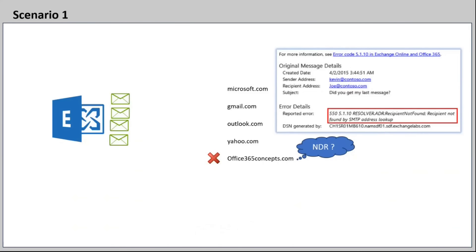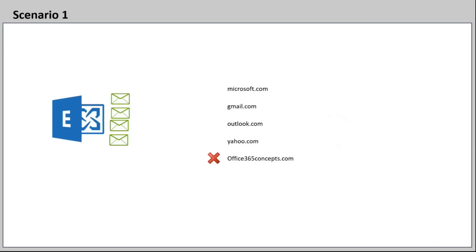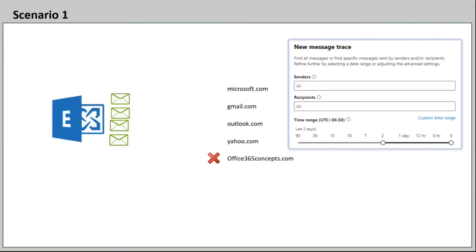If senders are receiving an NDR while sending emails to you, the sender will need to check the error within the NDR and fix it accordingly. But let's assume senders are not receiving any NDR while sending emails to you, and when you run a message trace at the sender's site the emails are showing as delivered — but the emails sent from them are not getting delivered to you. In this scenario, you will run a message trace at the recipient side.